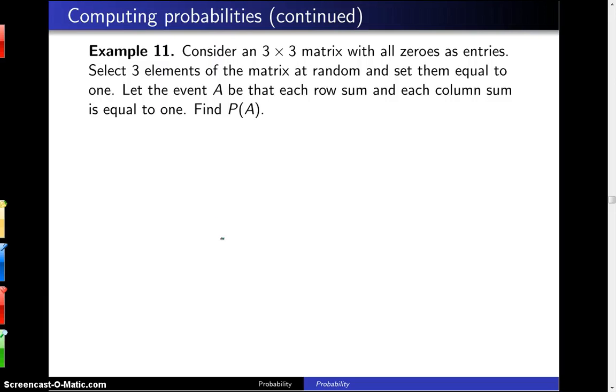Consider a 3x3 matrix with all zeros as entries. Select three elements of the matrix at random and set them equal to 1. Let the event A be that each row sum and each column sum is equal to 1. Find the probability of A.